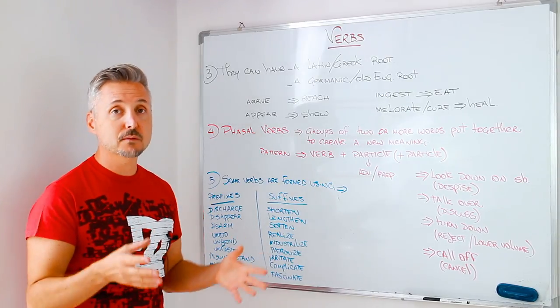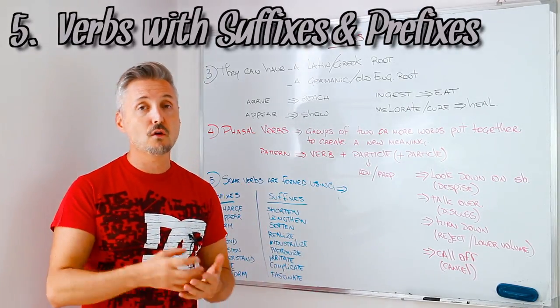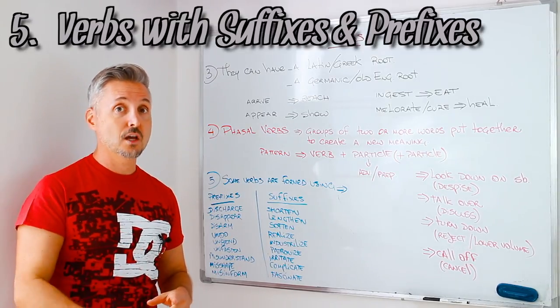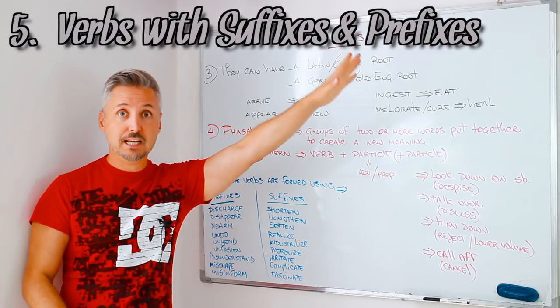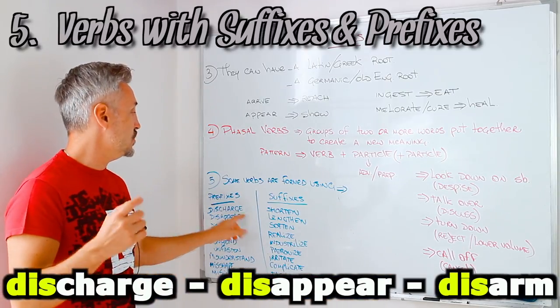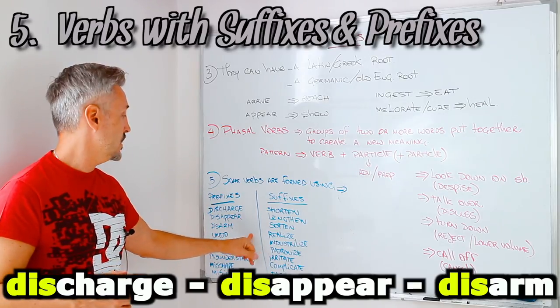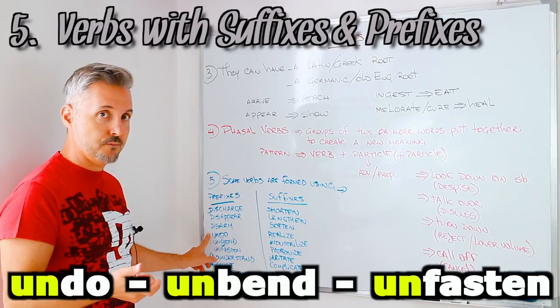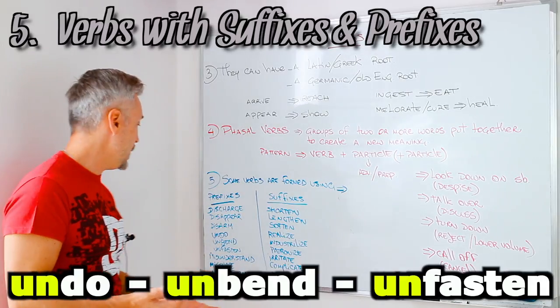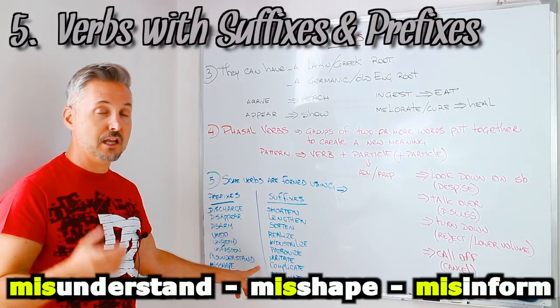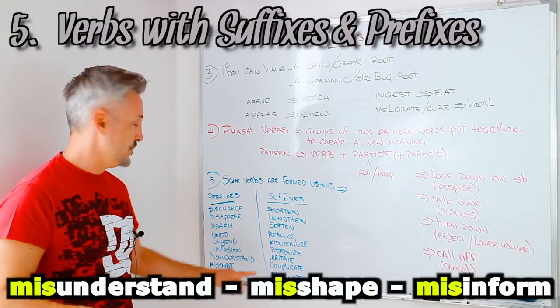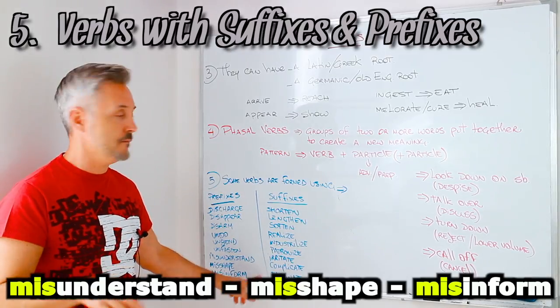So, the other point that I want to mention is that verbs can be formed using suffixes or prefixes. So, the ones with prefixes, I gave you some examples because there are so many. If you want to watch a lesson on prefixes, suffixes, or phrasal verbs, you can click here. So, prefixes. Let's look at some verbs with this. Discharge. Disappear. Disarm. Then, we have with un. Undo. Unbend. Unfasten. Now, we have another one with miss, right? Misunderstand. And you know what it means, right? Misunderstand. You didn't understand. You understood something else. Misunderstand. Misshape. Misinform. Etc. There are so many.